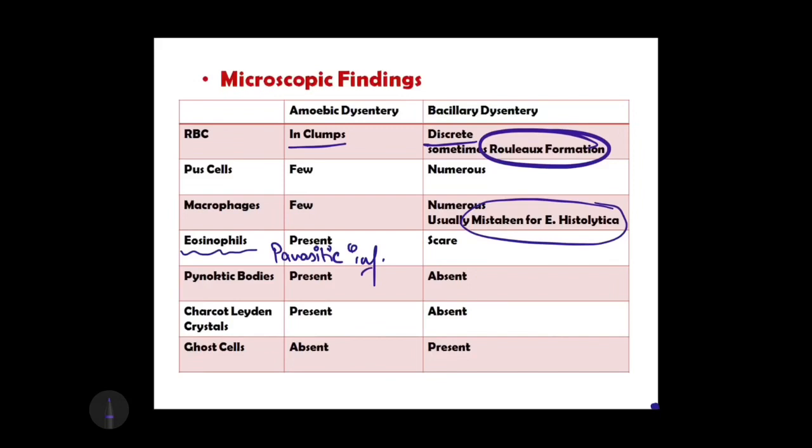Pyknotic bodies are condensed fragments of the nucleus after cellular necrosis or apoptosis. In amoebic dysentery there is significant intestinal cell damage, so pyknotic bodies are present in the stool. In bacillary dysentery there is comparatively very low cellular destruction, hence pyknotic bodies are absent. The next finding is Charcot-Leyden crystals, which are hexagonal bipyramidal structures formed by the breakdown of eosinophils.